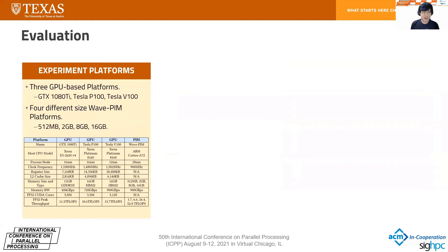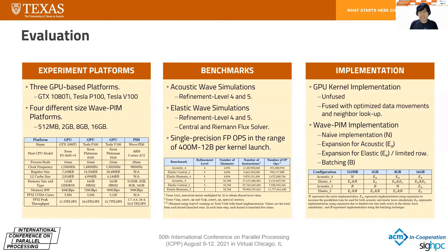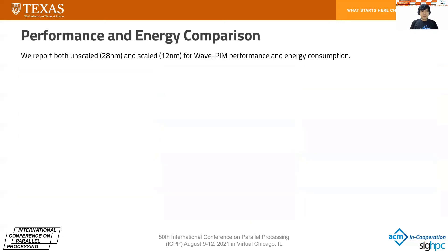For evaluation, we use three GPU-based platforms and four different WavePIM configurations. There are six benchmarks: two acoustic wave simulation benchmarks and four elastic wave simulation benchmarks. In general, each benchmark has 400 million to 12 billion single-precision floating-point operations per kernel launch. One time-step simulation requires launching the kernel five times. For GPU, there are unfused and fused implementations with more optimized data movement. For WavePIM, there are four implementations: naïve, expansion for acoustic, expansion for elastic, and batching. PIM results are obtained from simulators using 28 nm technology, while GPU results are from real hardware at 16 and 12 nm.